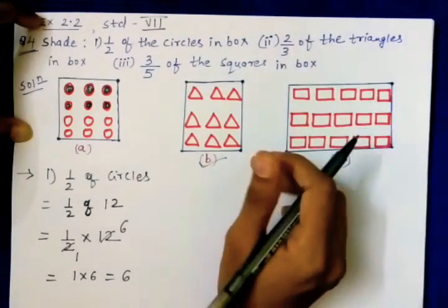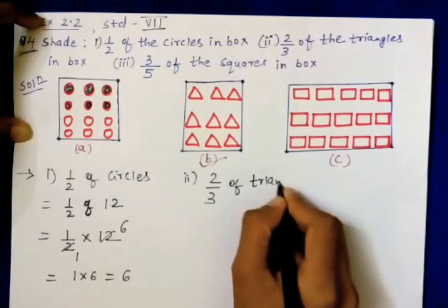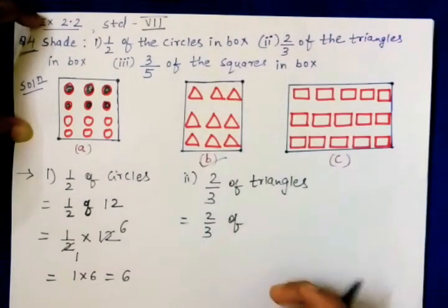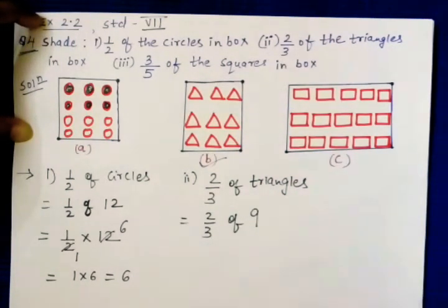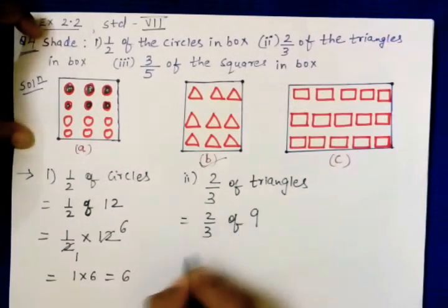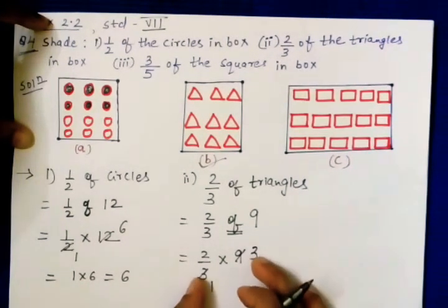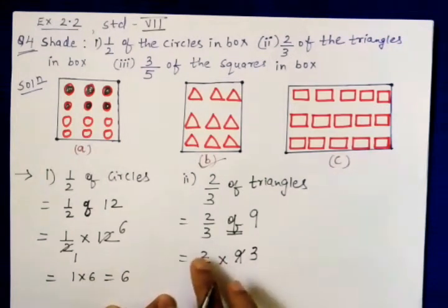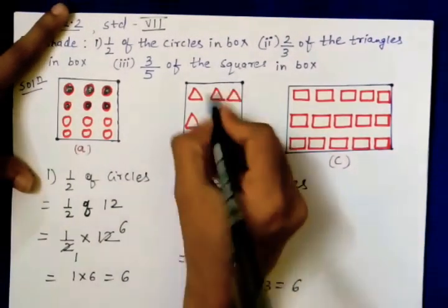Two-thirds means we need to find how much part to shade. Two-thirds of triangles — count: one, two, three, four, five, six, seven, eight, nine — total nine triangles. So two-thirds of nine: 'of' means multiplication, so two-thirds multiply by nine. Cancellation is possible — three and nine cancel, leaving two into three, which gives six.